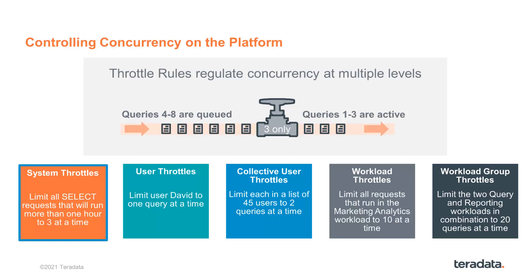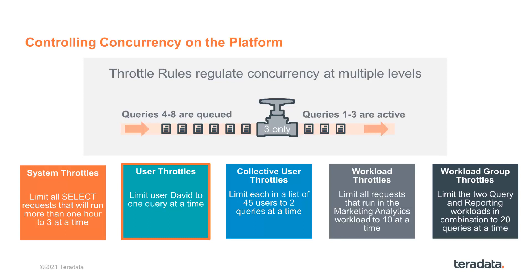The limit could be one query, it could be 20 queries, it could be 50 queries — whatever matches your particular business requirements. There are also user throttles where you can specifically assign a throttle just to one user and limit that user to maybe one or two queries at a time. You can also have collections of users under the control of a throttle.